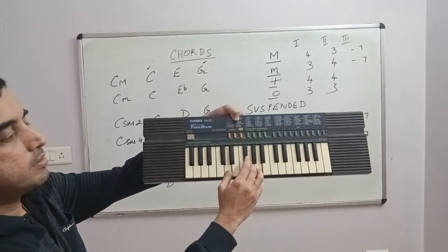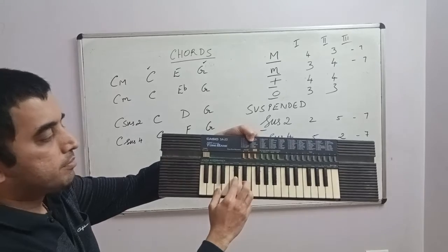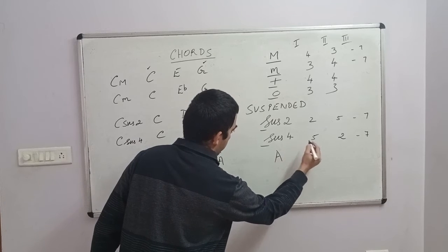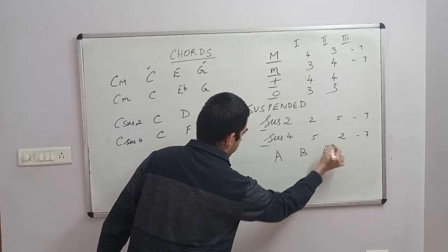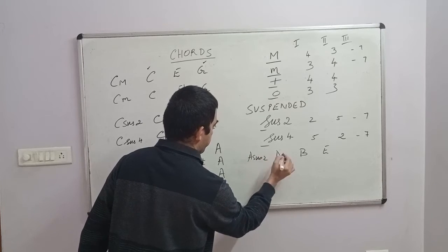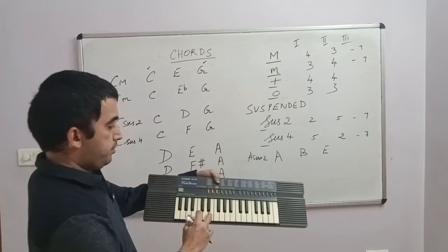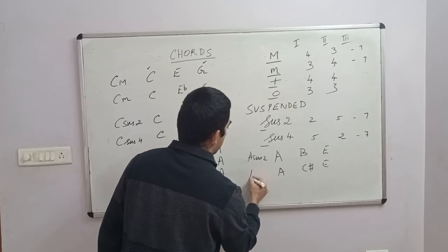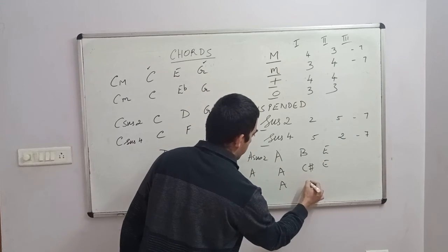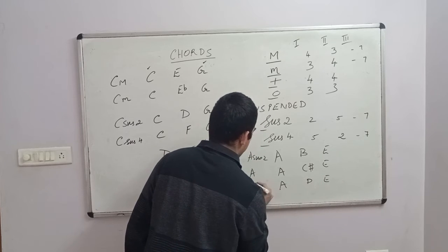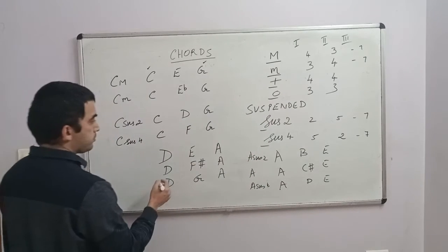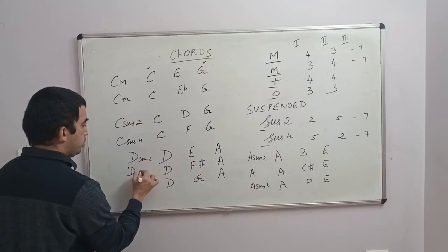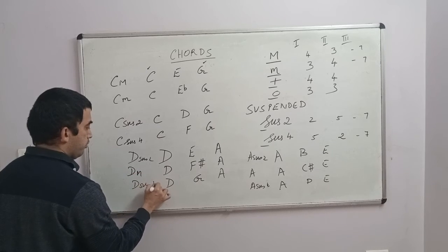So basically you go back and forth. So this was nothing but A, B, E, which was nothing but A sus2. Okay, then you went to A, C sharp, and D—that was an A major chord. Then you went to A, D, and E. Okay, A sus4. All right, so this was D chord, D sus2, D major, and D sus4. You get that?